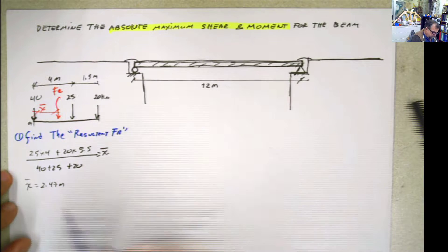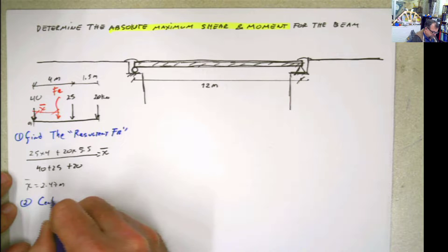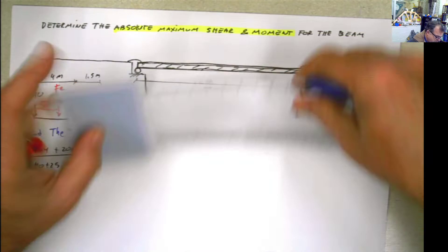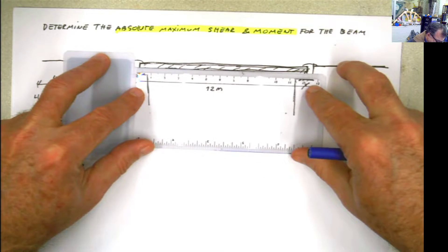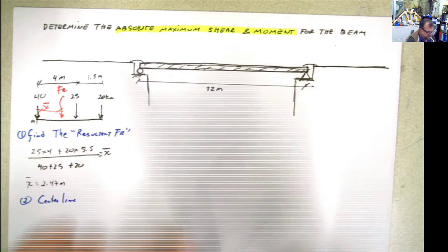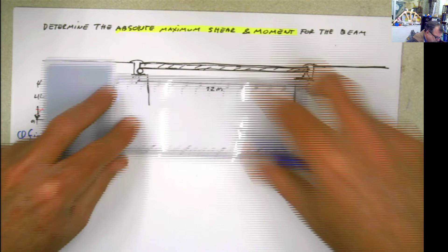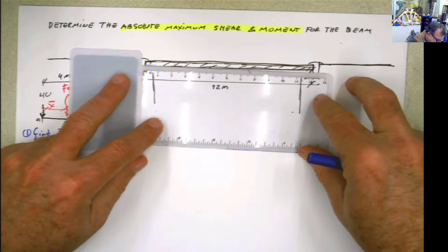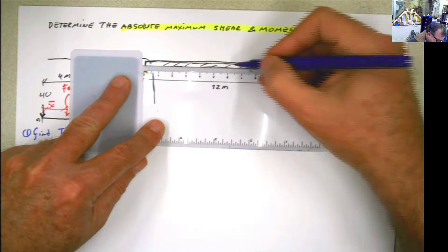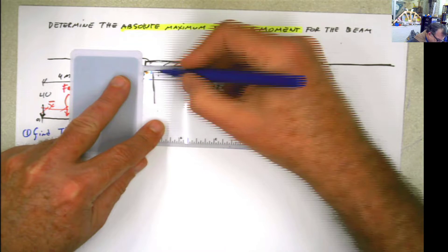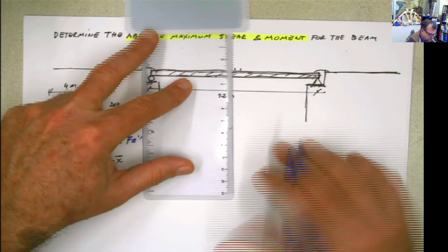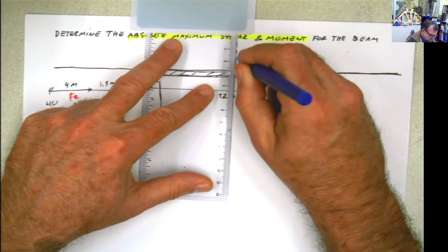The second step is to mark the centerline of the beam. The beam is 12 meters long, so the centerline is at 6 meters. You draw the centerline right there at 6 meters.